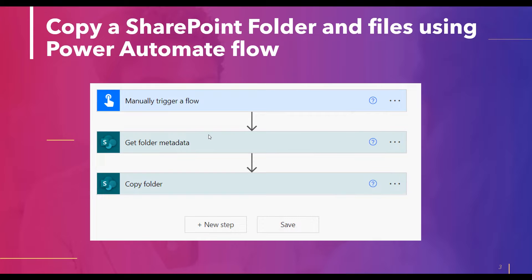Here is the preview of the flow that we are going to create. In this flow we are going to create a button flow using a manual trigger, which will trigger the flow manually. We will also use another action to get folder metadata, which will help get the information about the folder.